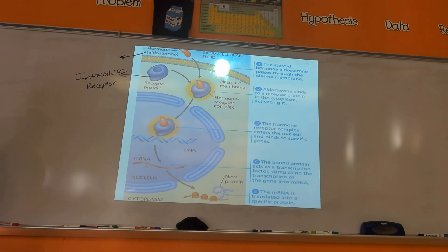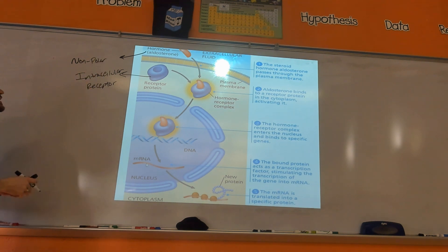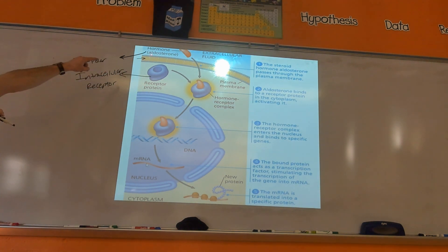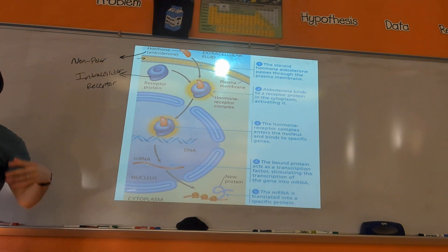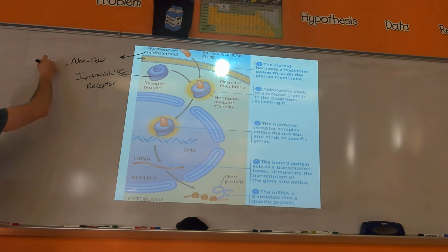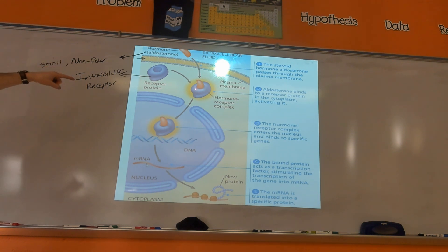Nonpolar or hydrophobic. Because the inner part of the cell membrane — the yellow fatty tails — those are made of fats, which are nonpolar. They don't mix with water; they're hydrophobic. So you've got to have a molecule that is either nonpolar, or typically nonpolar, but also really small. If they're super small, they're small enough where they can squeeze through those fatty tails, even if they're technically polar. And then they would bind to that intracellular receptor.